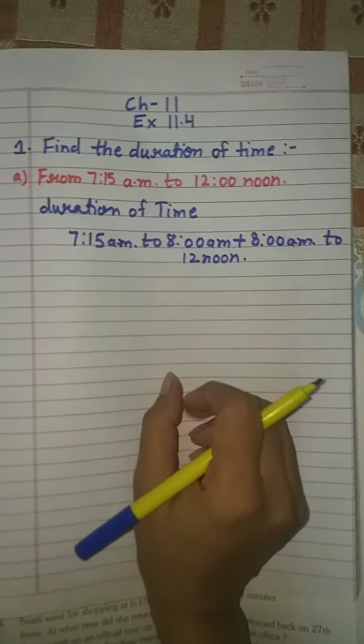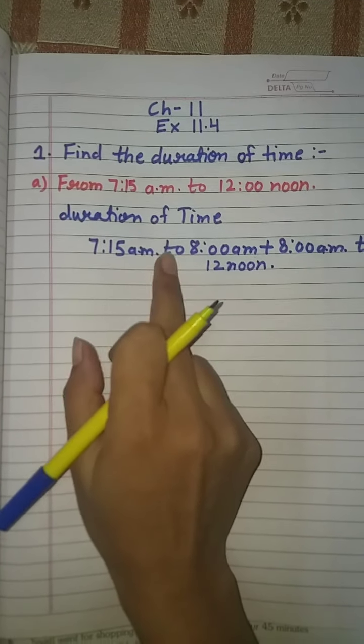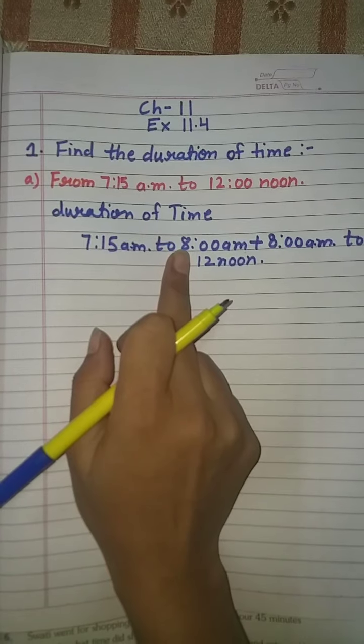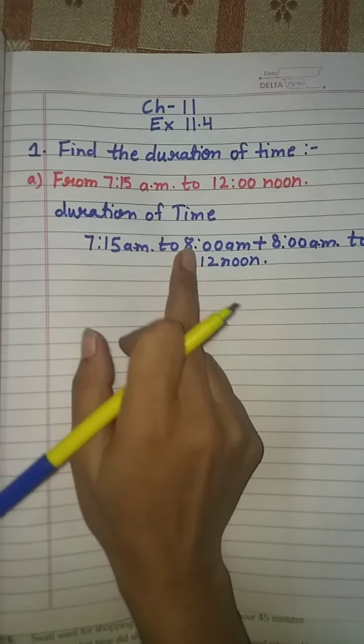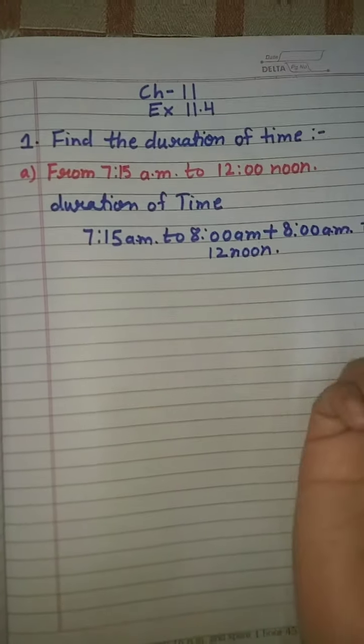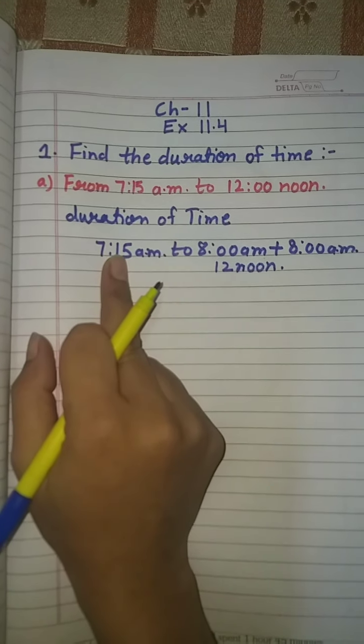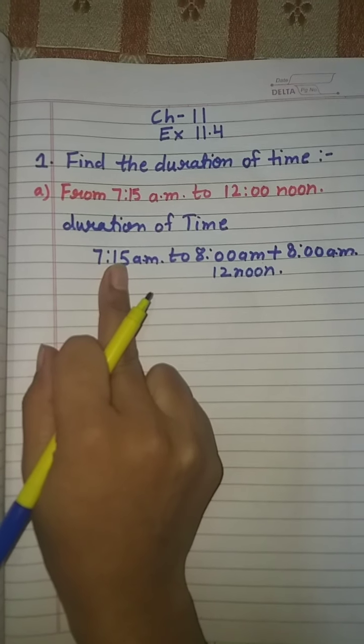Now first we will find 7:15 a.m. to 8 a.m. What is the time between 7:15 a.m. to 8? It's 45 minutes. How do we find? Yes, 60 minus 15 equals 45.